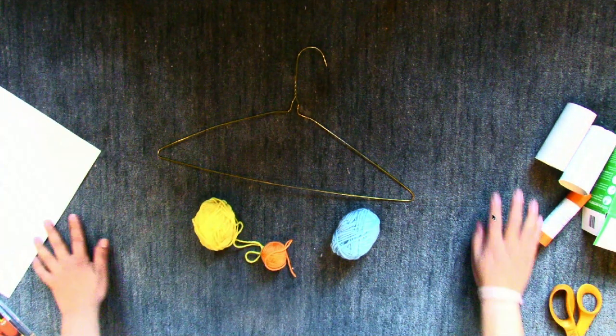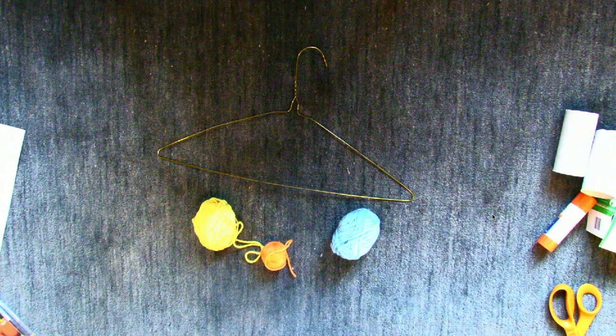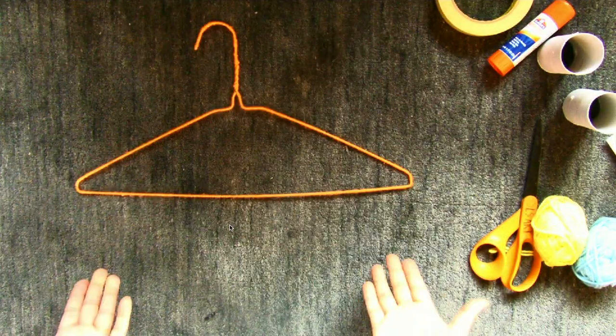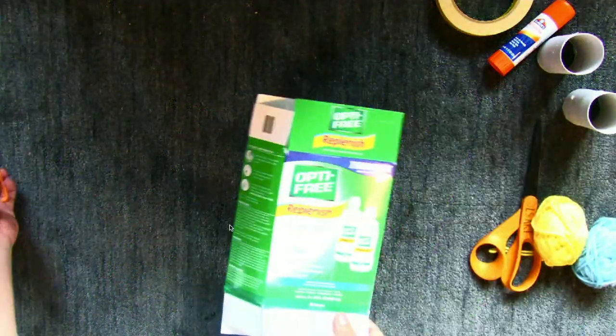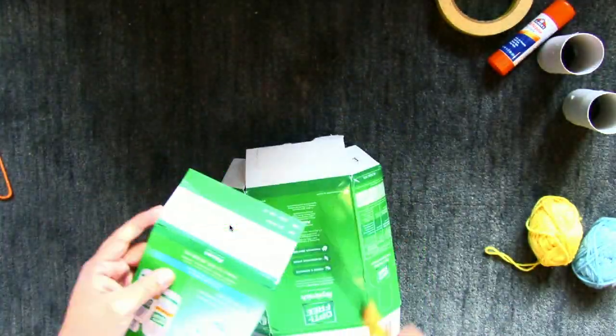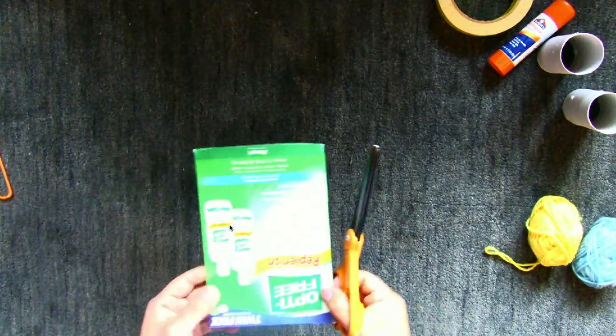I didn't really like the metal on the hanger, and I wanted to change it up. I use yarn, but you can definitely use some paint as well. Then I took my recycled box and I cut it into several sections. This is going to help me create different parts of my mobile.